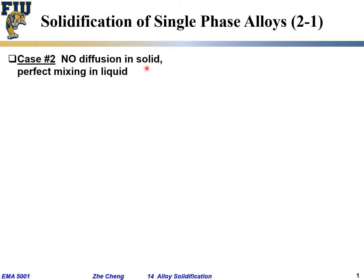We are not assuming equilibrium at all times. This case is characterized by no diffusion in solid, which means the diffusion within the solid is so slow that it doesn't really happen during the solidification process. On the other hand, we have so-called perfect mixing in liquid, meaning at any moment within the liquid — whether metal, ceramics, or polymers — the liquid composition is uniform. But within the solid, there is no diffusion.